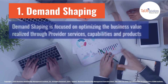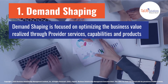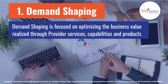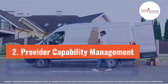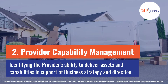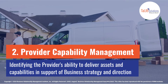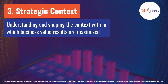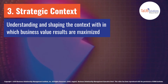1. Demand Shaping: focused on optimizing the business value realized through provider services, capabilities, and products. 2. Provider Capability Management: identifying the provider's ability to deliver assets and capabilities in support of business strategy and direction. 3. Strategic Context: understanding and shaping the context within which business value results are maximized.